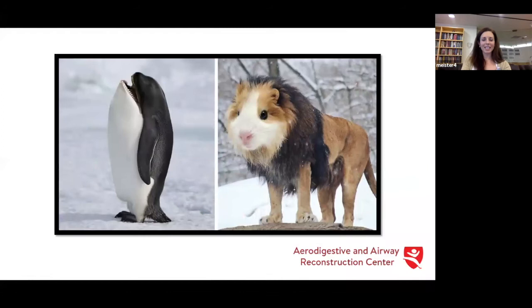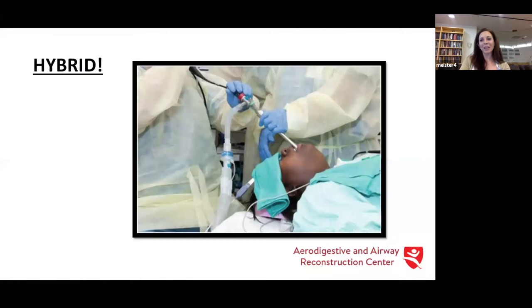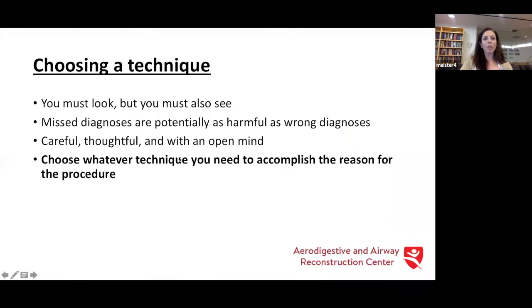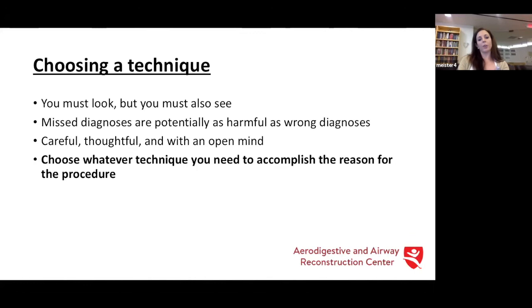What is this? It's a hybrid! Sometimes you may need a rigid piece of equipment to get past a stenosis, but you really want to see something more distal or suction tertiary plugs. This is a hybrid procedure — using these instruments in tandem, with your otolaryngologist on one and your pulmonologist on the other. How do you know which to choose? It really goes back to what you need to accomplish while you're there. You have to look and also to see — evaluate the entire airway and the pathology, and not miss a diagnosis. Be careful, thoughtful, and open-minded. Having multi-specialty colleagues there with an open dialogue is very complementary to this endeavor. Whatever technique you choose, just accomplish the reason you came. If a child has stridor and you can't find a reason for it, then you need to try a different technique.